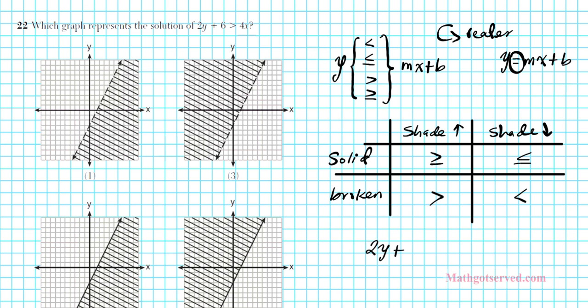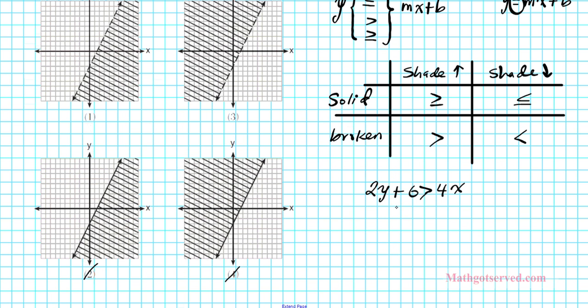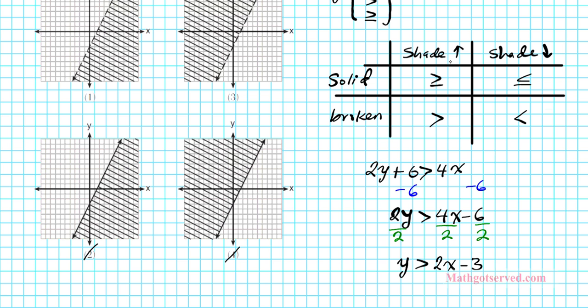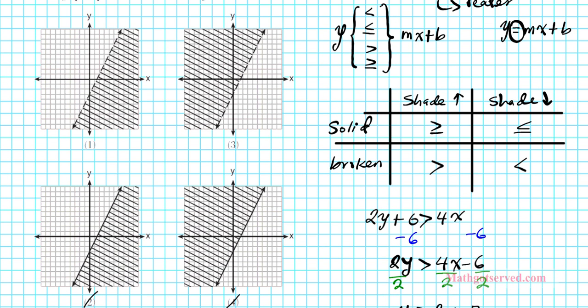So we have 2y plus 6 is greater than 4x. The goal is to isolate y using algebraic procedures. First, we get rid of the 6. We subtract 6 from both sides. That yields 2y is greater than 4x minus 6. And lastly, we divide both sides of the inequality by 2. Now if this were a negative 2, that would invert the orientation of our inequality. Since we're dividing by a positive number, there is no change in the orientation of the inequality. So we have y is greater than 2x minus 3. So since we have greater than and the equation in y equals mx plus b form, that means we're going to be shading up and the line must be broken since there's no inclusion line underneath the inequality.